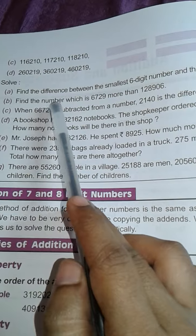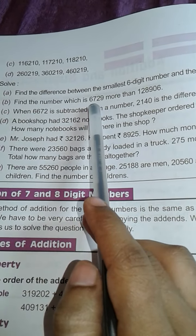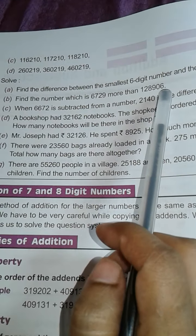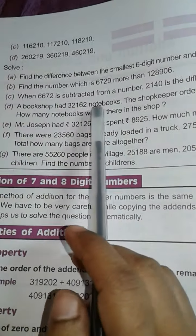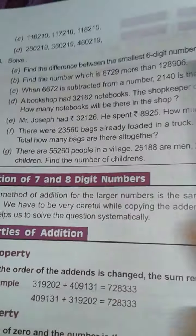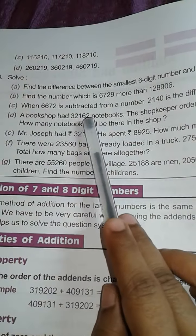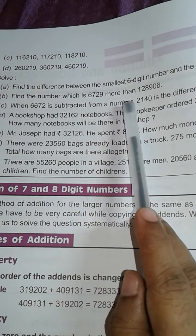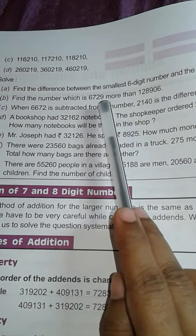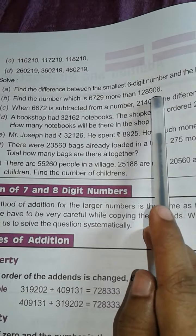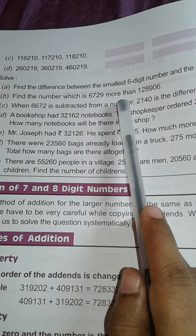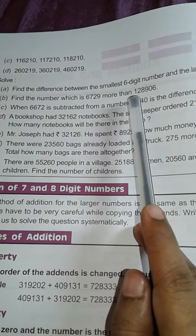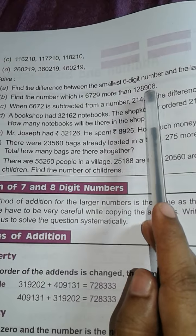Find the number which is 6729 more than 1,20,906. So children, what do you do here? What is the number which is 6729 more than this number? So if you add this number and that number, you find out the number which is more than 1,20,906.